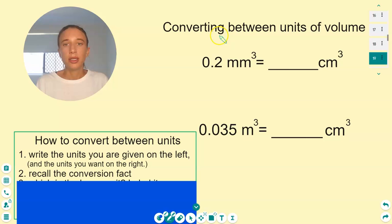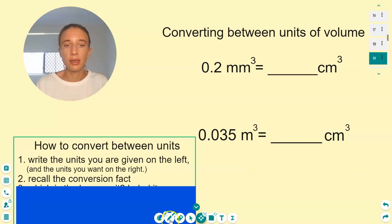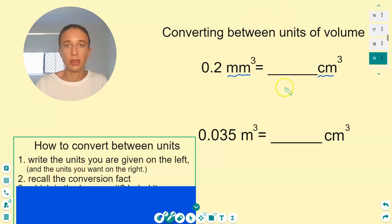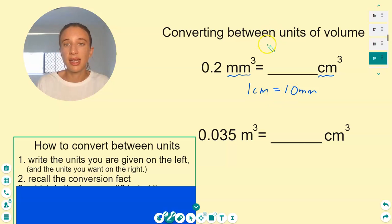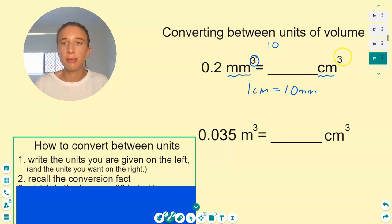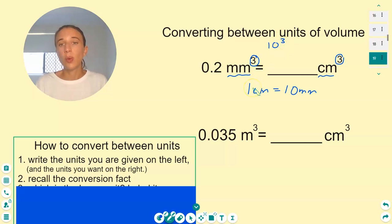First let's look at converting between units of volume. Millimeters to centimeters — what's the conversion factor? Well, one centimeter is 10 millimeters, from my last video on converting between units of length. So one centimeter is 10 millimeters, that's our conversion factor. And since we're converting millimeters cubed to centimeters cubed, we must also cube that conversion factor.